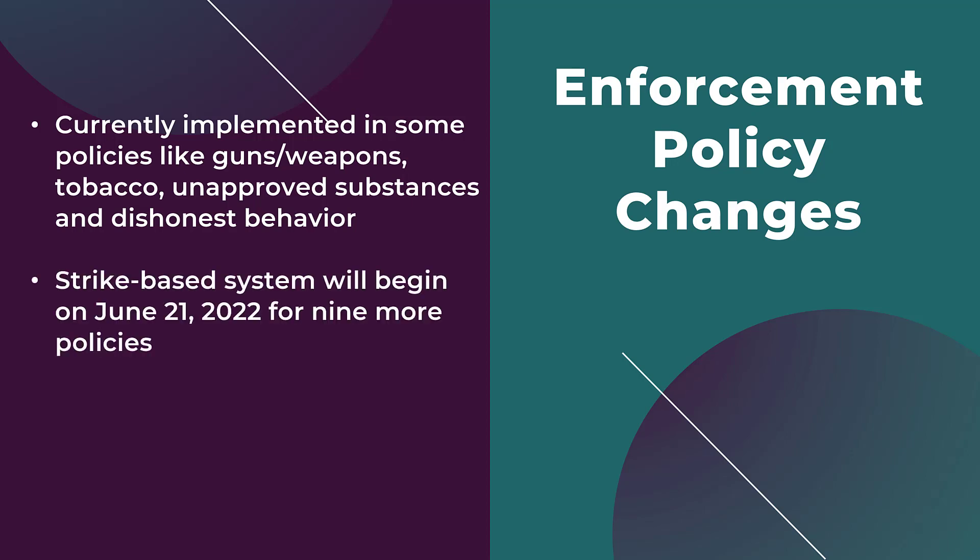Most likely you received an email that the strike-based system will be going through some updates starting on June 21st, and that is going to be the addition of nine more policies. The update won't happen to all nine policies at once — Google said it will be a gradual rollout over a period of three months starting on June 21st.